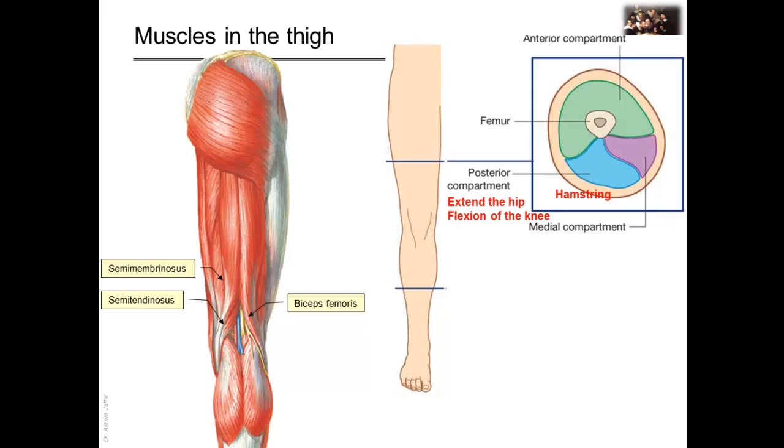They include semitendinosus, semimembranosus, and biceps femoris muscles, which are the true hamstrings, together with the hamstring portion of adductor magnus. These muscles were called hamstrings because their tendons were used to hang up hams in meat shops. In ancient times, it was common for soldiers to hit their opponent's horse posterior to the knee in order to cut the tendons of hamstrings, so the horse and the rider would fall over. Even in today's language, some people still use the term hamstring to indicate helplessness.